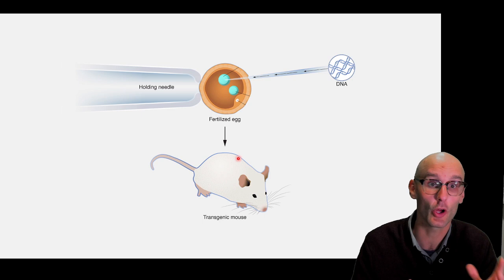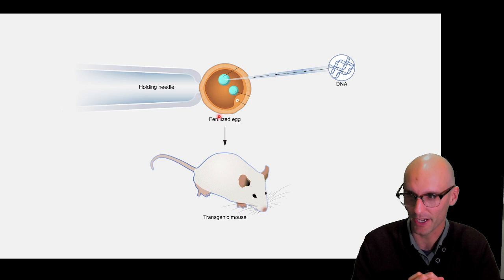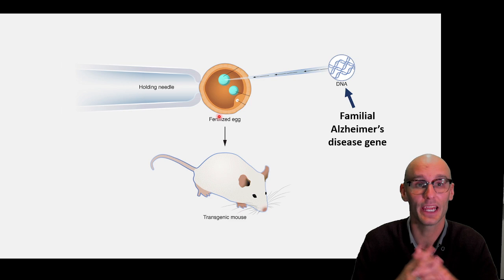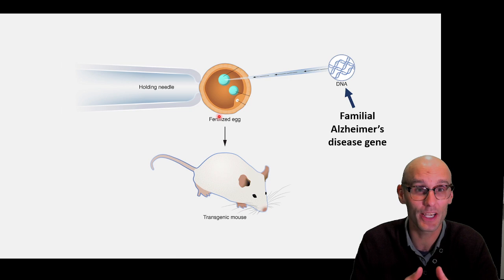To create the model we take a single-celled embryo — a fertilized egg, a zygote if you will — and we need to insert the DNA that we want. We need to put in a piece of DNA that contains that familial Alzheimer's disease mutation. Then when the mouse grows up, typically they'll be heterozygous for that gene, and sometimes we want to make them homozygous, which we do through breeding. We have various reporters and checks to make sure that the gene we tried to insert has been inserted.